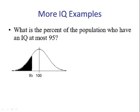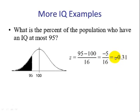Next step, we change 95 to a z-score. Be sure to include the negative sign because 95 is less than the mean. So our z-score will be negative, negative 0.31. Looking up in table 5 we see that the probability of the z being less than a negative 0.31 is 0.3783.